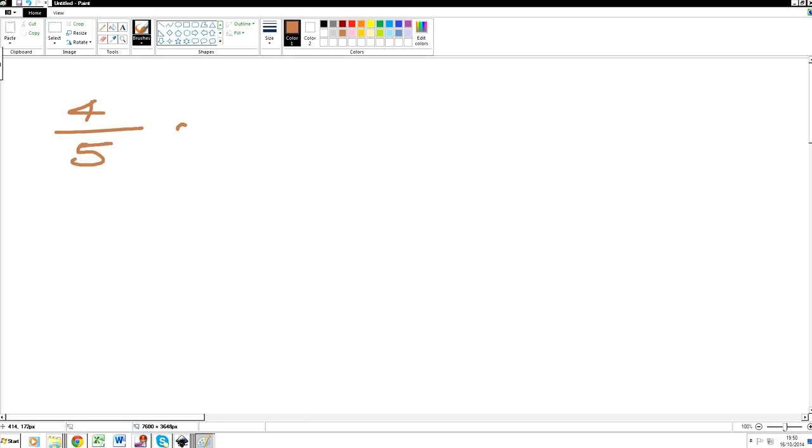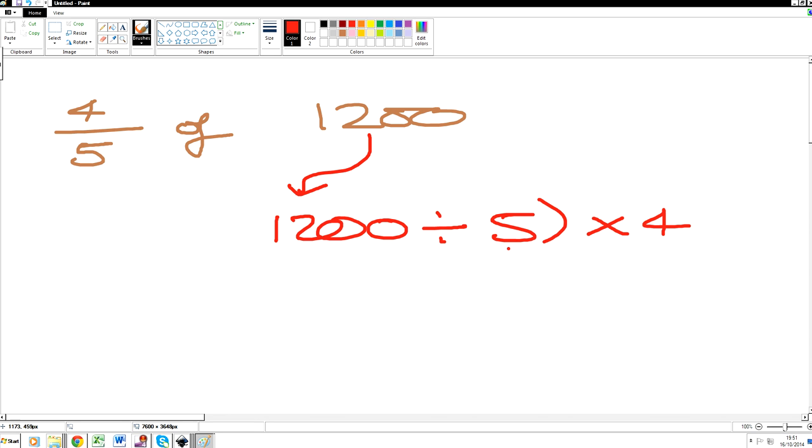Okay, 4 fifths of 1200. So what do we do? Where do we start the question? We start with 1200. So 1200 divided by 5, and then multiplied by 4.